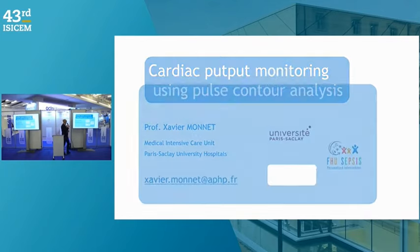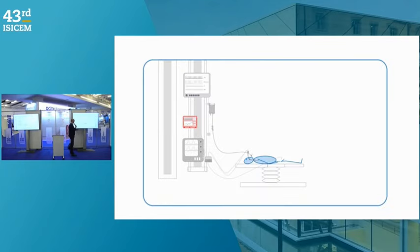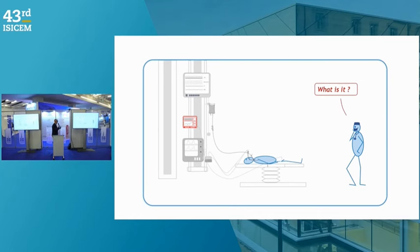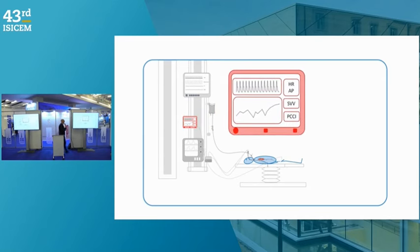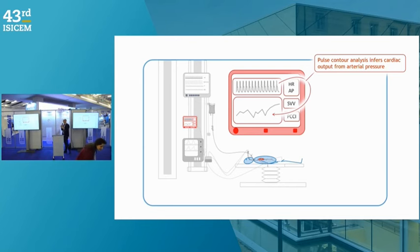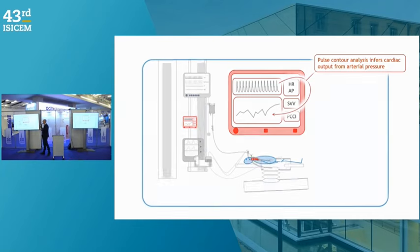What is pulse contour analysis? Let's imagine a patient in the operating room, because that's the typical setting where such devices are used. This patient is monitored with an uncalibrated pulse contour analysis device — or pulse wave analysis device, which is the same. These devices estimate cardiac output and stroke volume from the arterial pressure waveform. That's pulse contour — the pressure waveform.